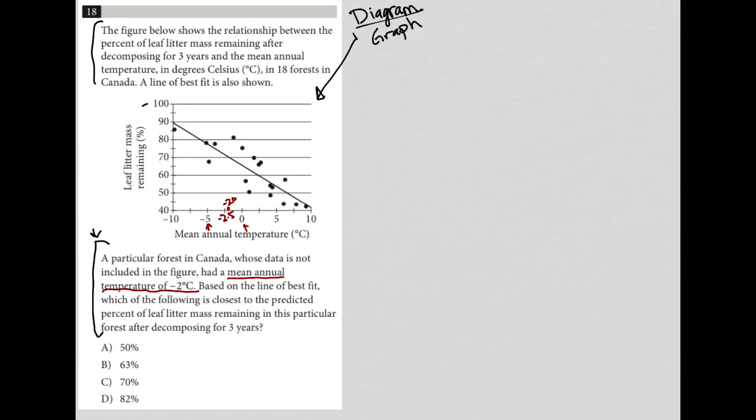Based upon the line of best fit, which of the following is closest to the predicted percent of leaf litter mass remaining in this particular forest after decomposing for three years? So all I'm doing is estimating where negative two is, going to draw a vertical line up from there best I can to the line - not the y-axis, to the line of best fit.